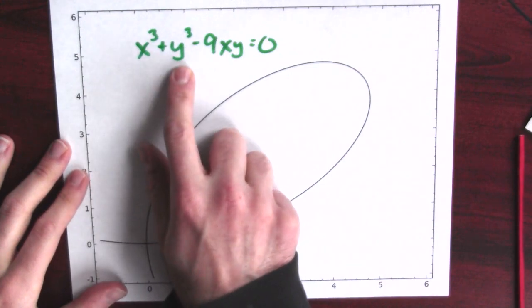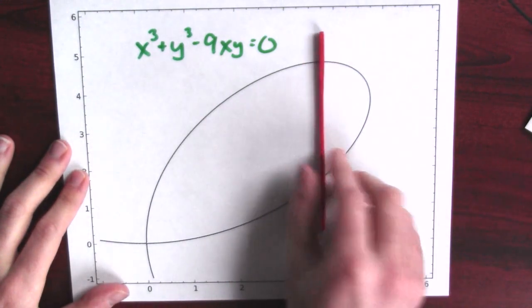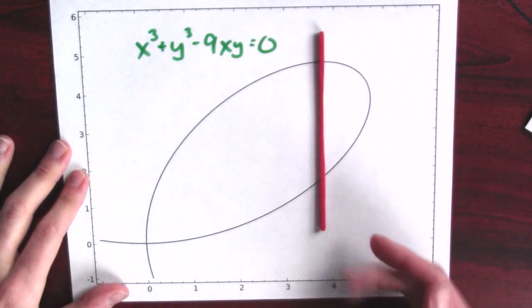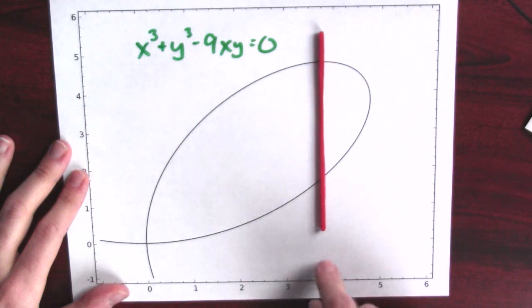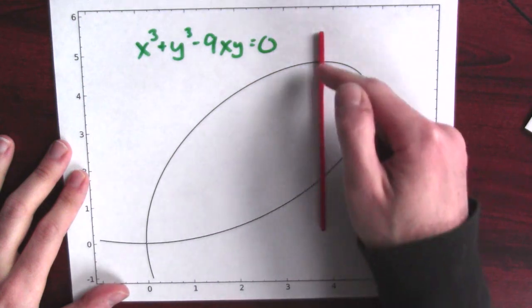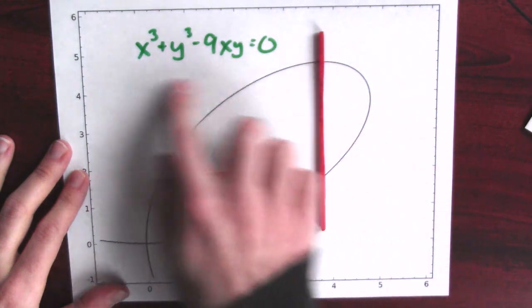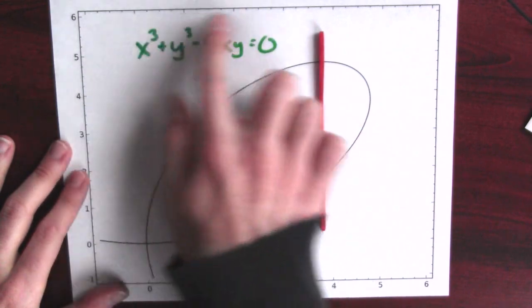I can't solve for x in terms of y. Look, this graph fails the vertical line test. For a given value of x, there's potentially multiple values of y which will satisfy this equation.